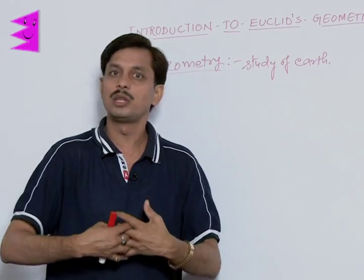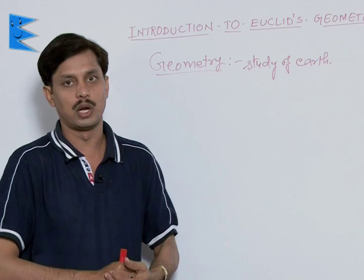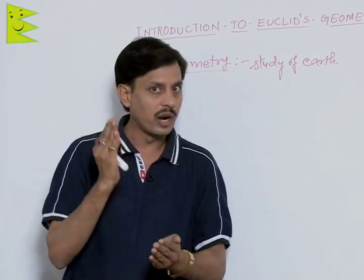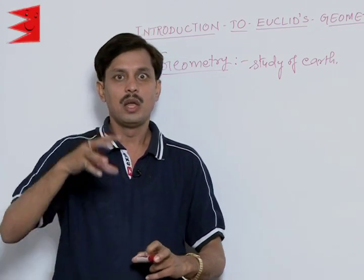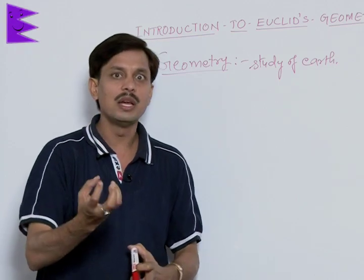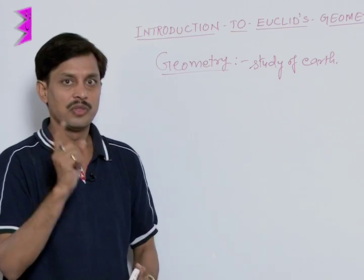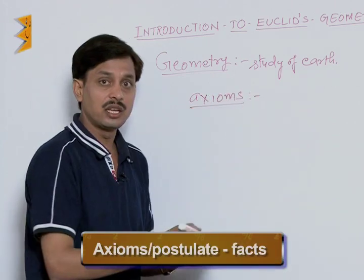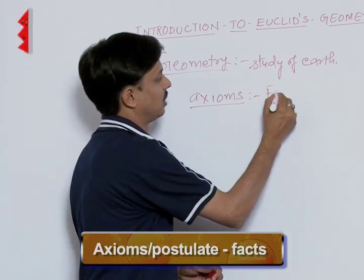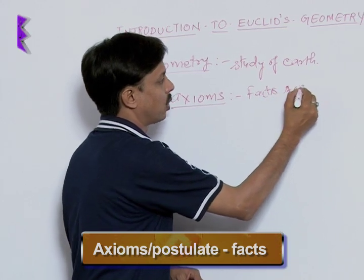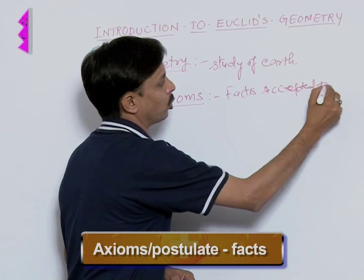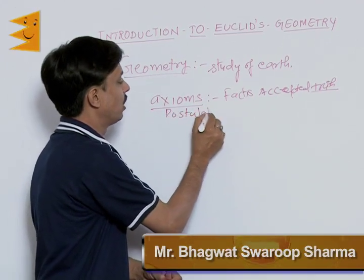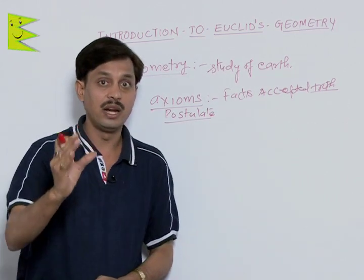We have heard about theorems — for example, the Pythagoras theorem, equal angle theorem, and theorems like a median divides a triangle into equal parts. So what is a theorem? Sometimes a few facts have to be accepted as true facts. So what is an axiom? Axioms are facts — accepted truths. Any accepted truth is known as an axiom, or we call it a postulate.